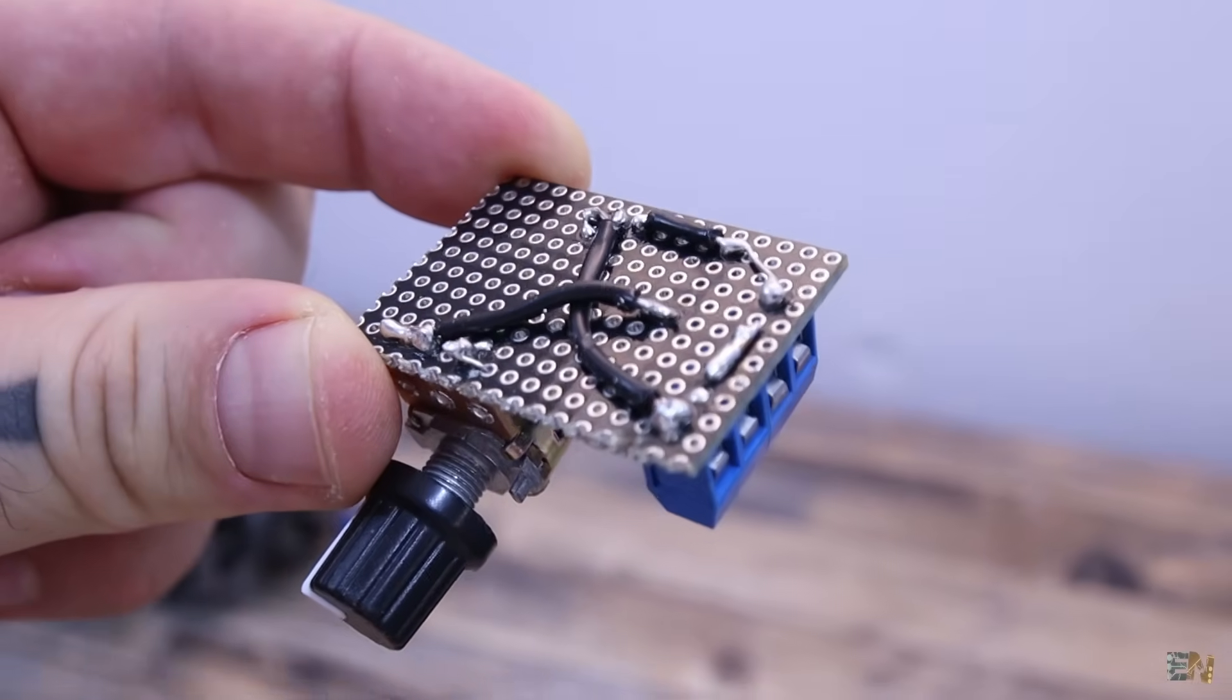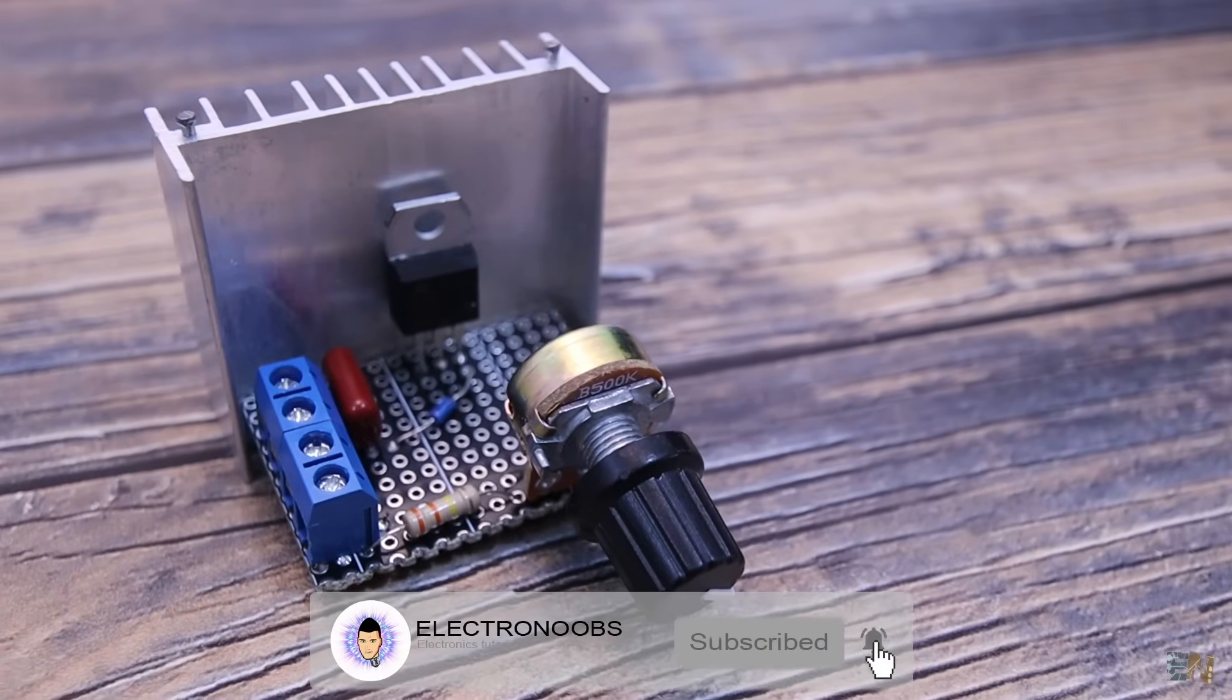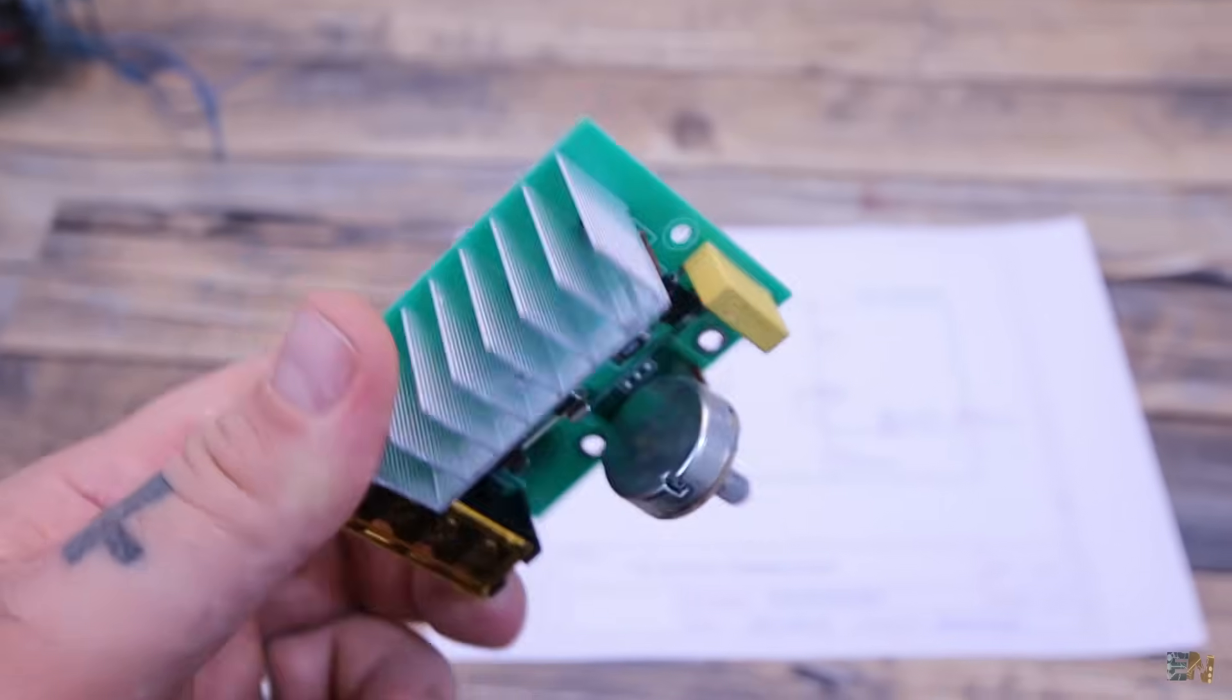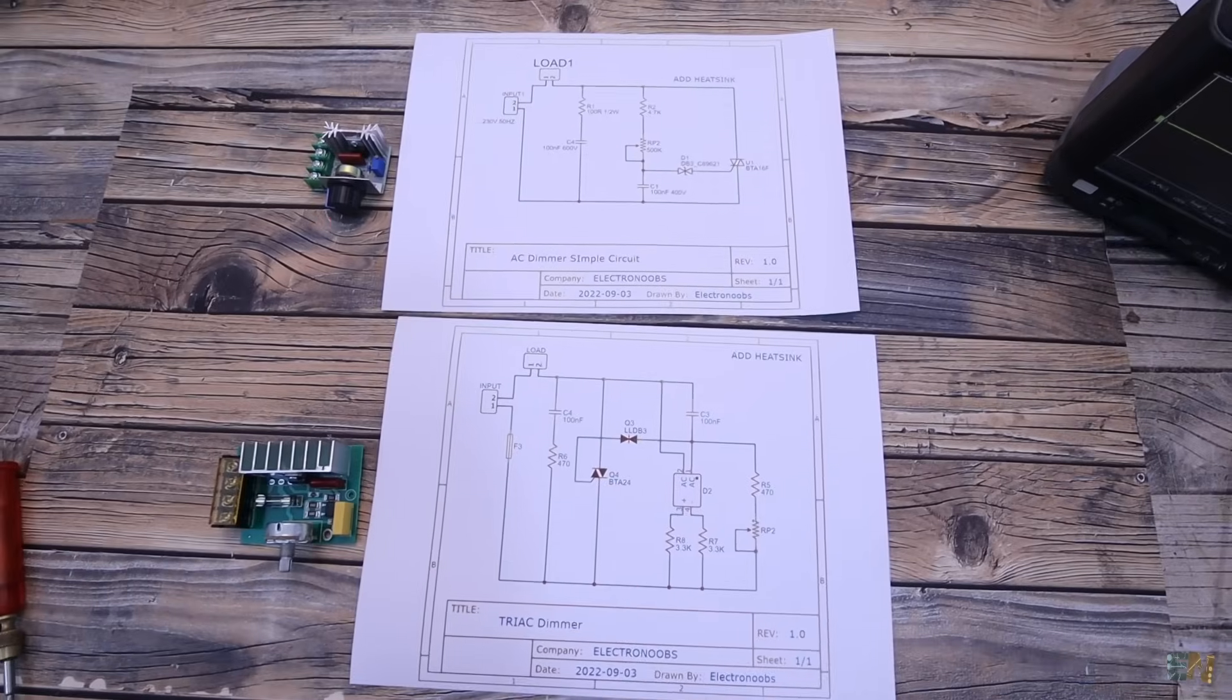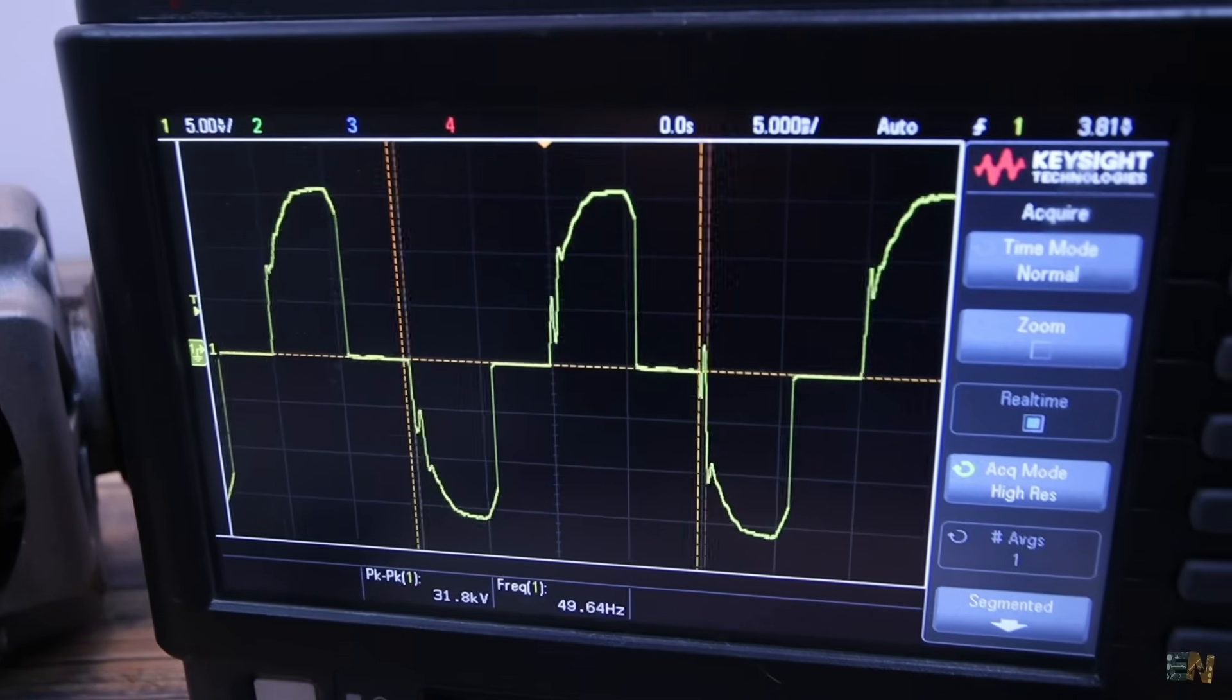So guys, check Electronoobs.com for this schematic and more explanation. I hope that you now know how the analog AC triac dimmer works. It's quite easy, right? I hope that you have learned something new and if so, give me a like or comment below. Thanks again and see you later guys.